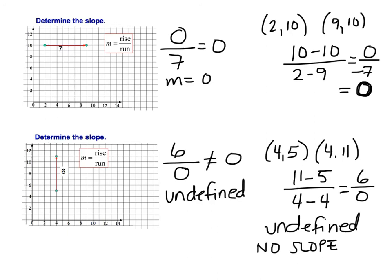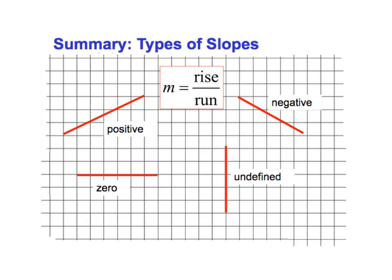All right, so let's summarize a little bit here. So uphill line has a positive slope. A downhill line has a negative slope. A horizontal line has a slope of 0. And a vertical line has a slope that is undefined or no slope at all.